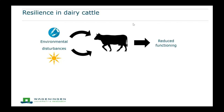First of all, it's good to define what we mean with resilience, because it can differ quite a bit between people. Cows are always subject to all kinds of disturbances throughout their lives — for example, pathogens or heat waves — and they can result in reduced functioning. There are differences between how much cows are affected: some cows get really ill and stop producing milk, and other cows just keep on doing what they were doing. Those last cows are what we would call resilient cows.